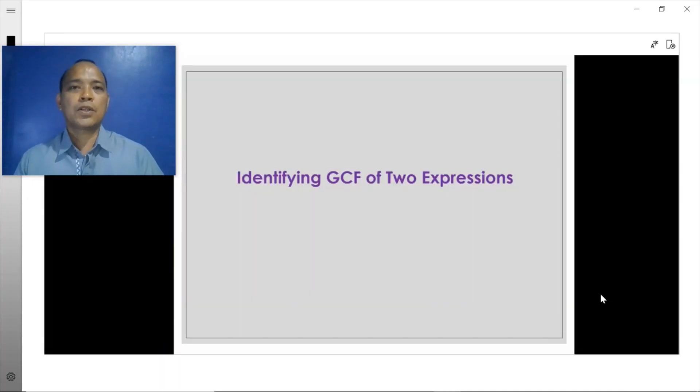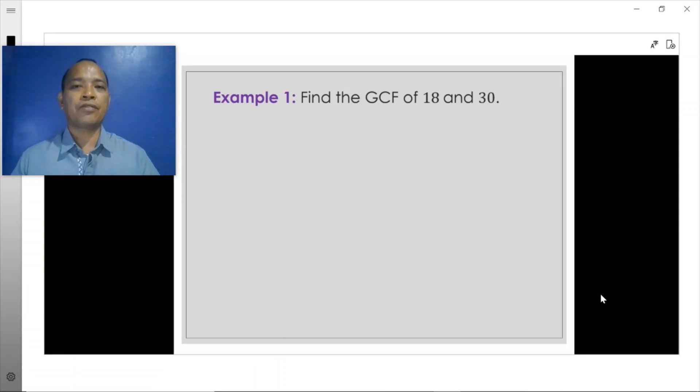The most basic among these topics, we're going to start then with identifying the GCF of two expressions. For example, how do you find the GCF of 18 and 30? To find the GCF of 18 and 30, we factor each of these numbers into prime numbers.